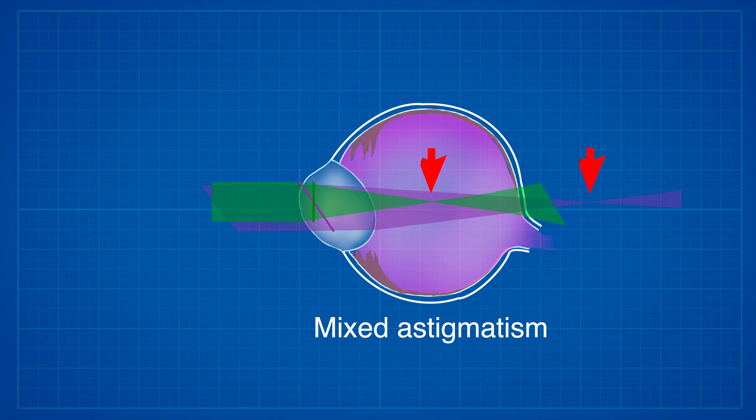Each combination affects your vision differently, and that's why it's so important that you obtain a unique prescription in order to achieve the clearest vision possible. There are multiple ways you can make this up in a prescription in the form of glasses and contact lenses. The most common symptom of astigmatism is distorted or blurry vision, but you can have other symptoms such as eye strain, headaches, and trouble driving at night. If you have astigmatism at a young age, it can affect a child's ability to focus at school, and may even cause amblyopia.